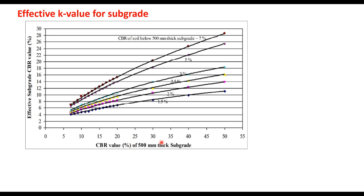IRC suggests that effective k value for subgrade can be determined from these charts. If you take one example, the CBR value of subgrade soil is 20 percent and CBR of top layer of embankment is 6 percent. Then you enter this chart from CBR value of 500 mm thick subgrade, which is 20 percent.